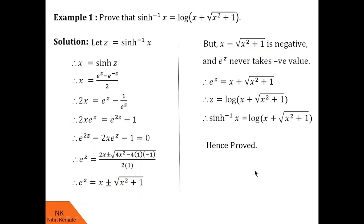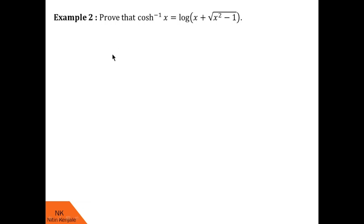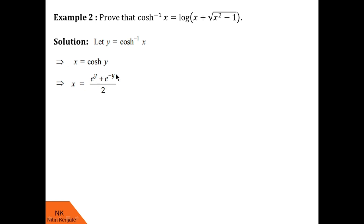Now let us go ahead with example 2. Here we are asked to prove that cosh⁻¹(x) = log(x + √(x² − 1)). Consider y = cosh⁻¹(x), therefore x = cosh(y). The exponential form of cosh(y) is (e^y + e^(−y)) / 2. Cross multiplying gives 2x = e^y + e^(−y), and writing e^(−y) as 1/e^y, further cross multiplication gives e^(2y) − 2x · e^y + 1 = 0. You can pause the video and check this calculation.